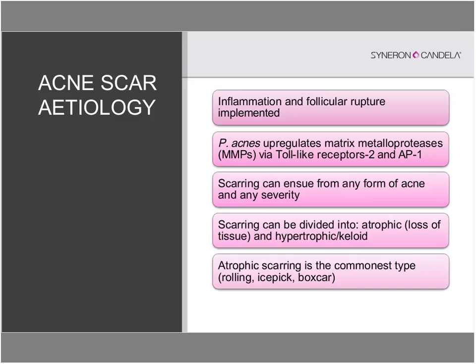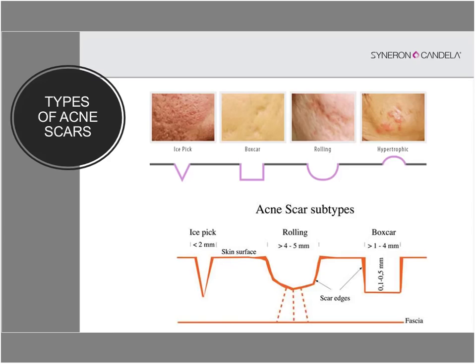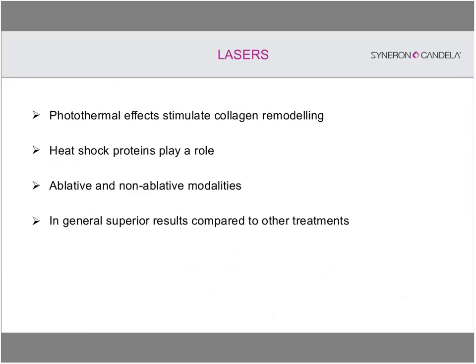Simplistically, we divide acne scarring into atrophic (loss of tissue) or hypertrophic/keloidal — such as raised scars on the shoulders. On the face, the vast majority tend to be atrophic, with three subtypes: rolling scars with fibrous strands pulling down at the base; ice pick scars that are narrow but deep; and box scars with upright shoulders that are somewhat shallower. Box scars tend to respond better and are easier to treat compared to ice pick scars, with rolling scars in between. I generally use combination treatment, which I will explain shortly.